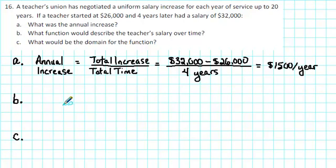So what function would describe the teacher's salary over time? The key words that we read is that the teacher's union has negotiated a uniform salary increase. That means that the salary is going to increase by the same amount each year. In other words, there's a constant average rate of change for the teacher's salary with respect to time. When there's a constant average rate of change, then the most appropriate function to use is a linear function.